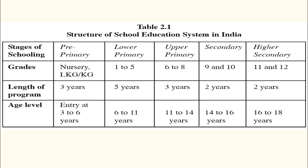Lower primary covers classes 1 to 5, a 5-year duration, with an age group of 6 to 11 years. Upper primary covers classes 6 to 8, a 3-year duration with age group 11 to 14 years. Then comes secondary — 9th and 10th, a 2-year program with age group 14 to 16 — and then higher secondary or senior secondary for ages 16 to 18, again a 2-year program.